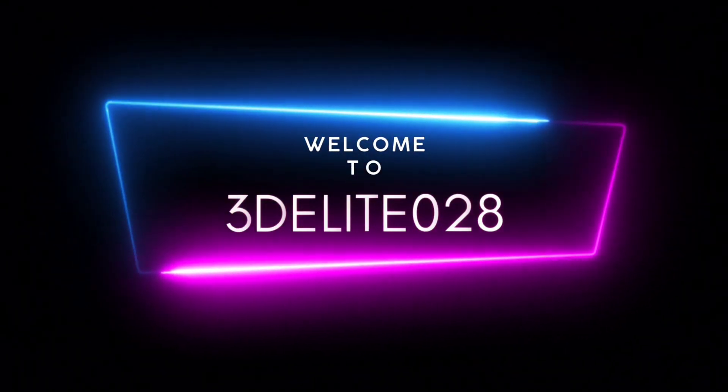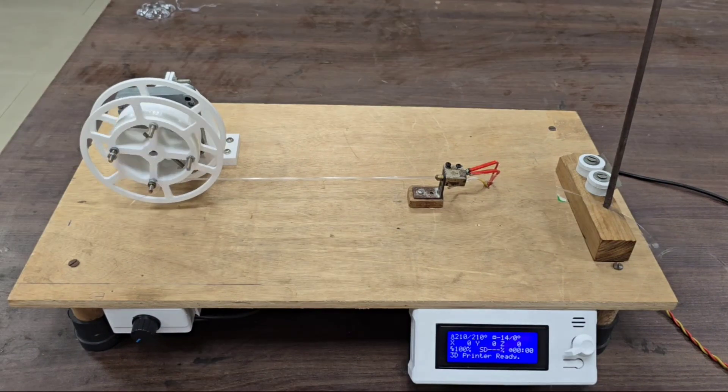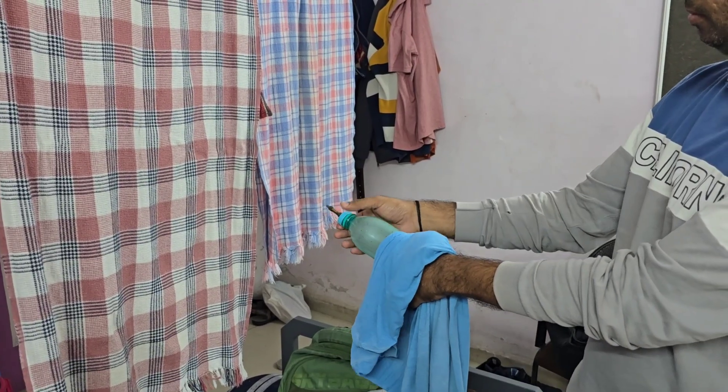Hello friends, welcome to 3D Lite. This is a quick update on the PET filament making machine. In this video, I will show how to prepare plastic bottles for making strips using different methods based on available resources.